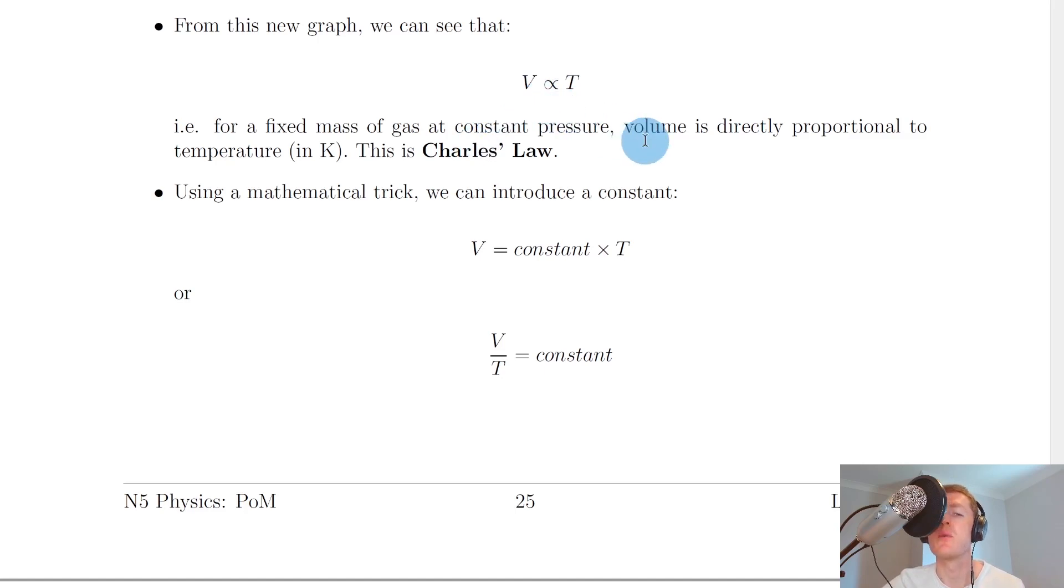So just like we did for Boyle's Law and Gay-Lussac's Law, we're going to form an equation from this relationship in symbol form here. So starting with V is directly proportional to T, remember if we want to get rid of this proportional sign and introduce an equals sign instead, then we need to multiply this thing on the right hand side by a constant. So we end up with V equals a constant times T.